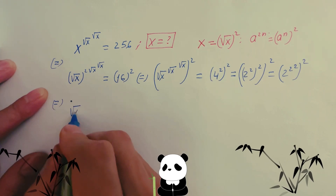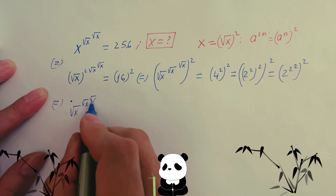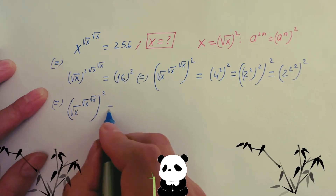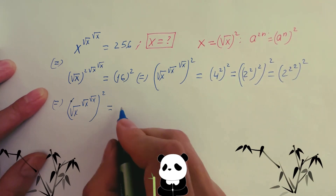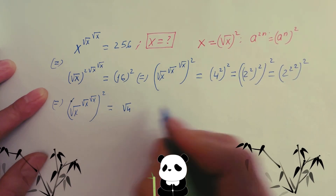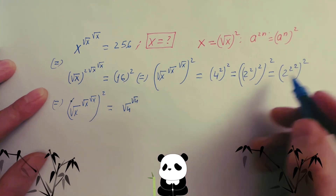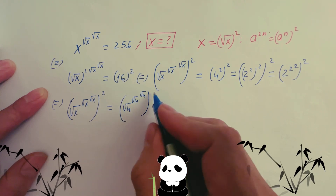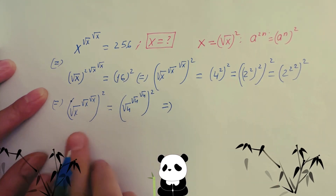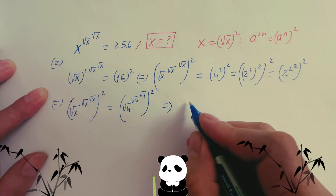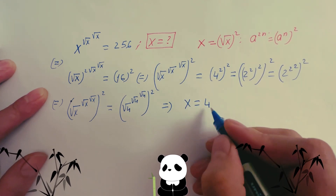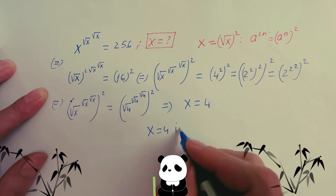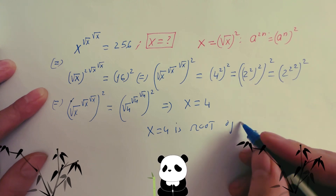Now you have square root x, square root x, square root x to the power 2, which matches square root 4 to the power 2, square root 4, and then power 2, equal to square root 4 to the power 2. That equation holds when x equals 4. So x equals 4 is the root of the equation.